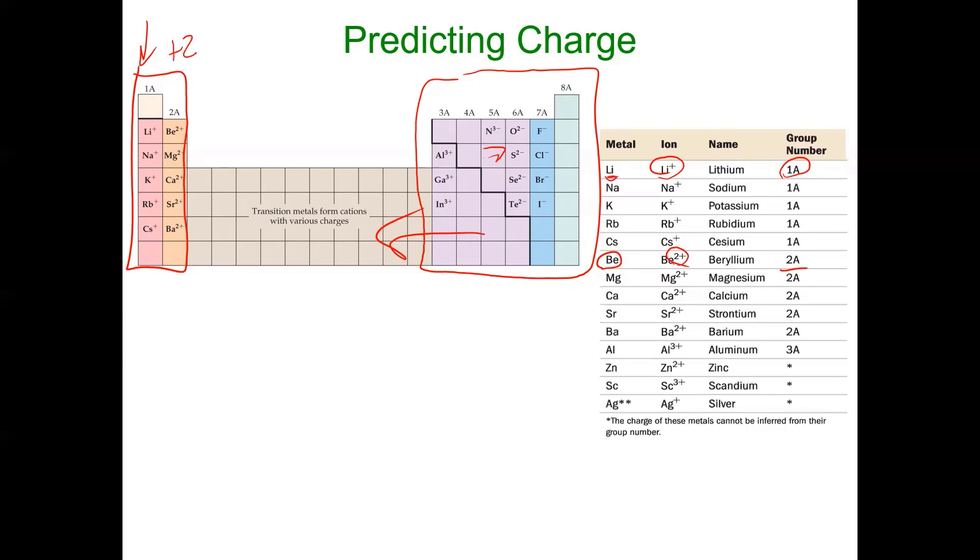Now conventionally, you don't write plus two. It would be a two plus. That's how you do it conventionally. Then I go down here, aluminum. What charge? Three, because it's easy to get rid of those three valence electrons. That's why it's placed in that family of 3A or group 3A, because it has three valence electrons.